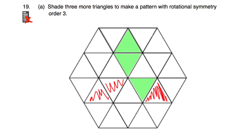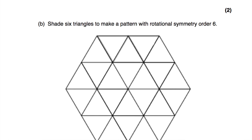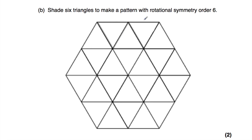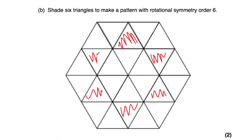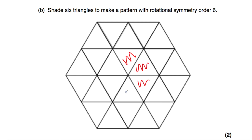Question 19b: shade in six triangles to make a pattern with rotational symmetry order 6. One option is to shade six triangles in a sun shape — spinning through 360 degrees it lands on itself six times. Another option is to shade six triangles forming a regular hexagon, which also has rotational symmetry order 6.